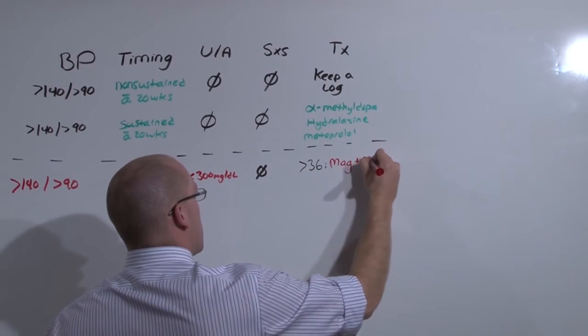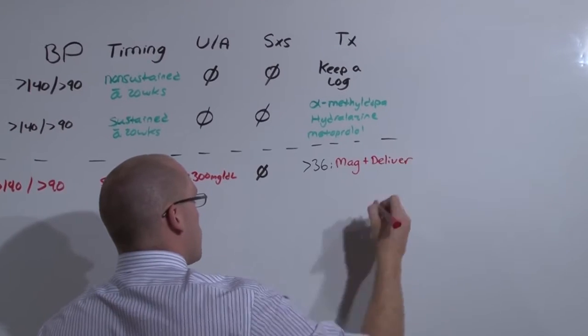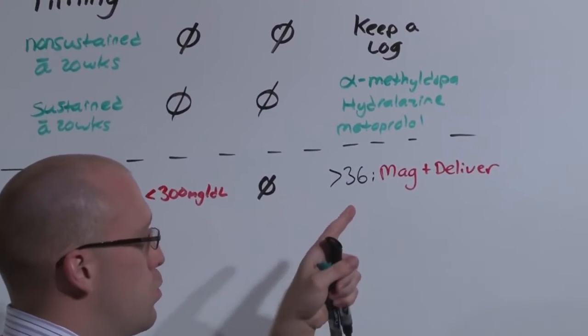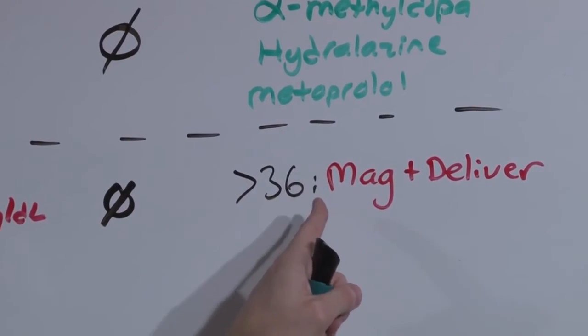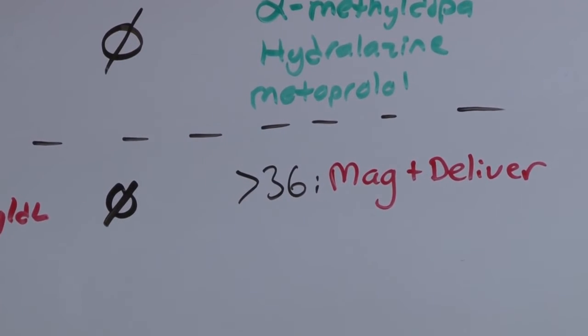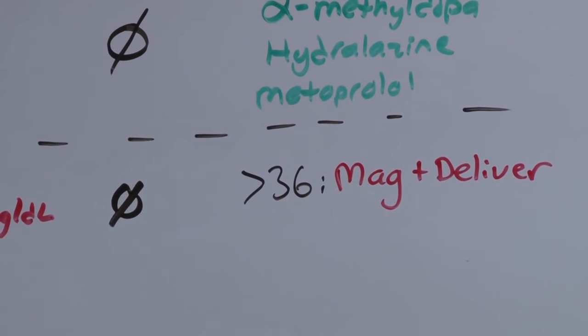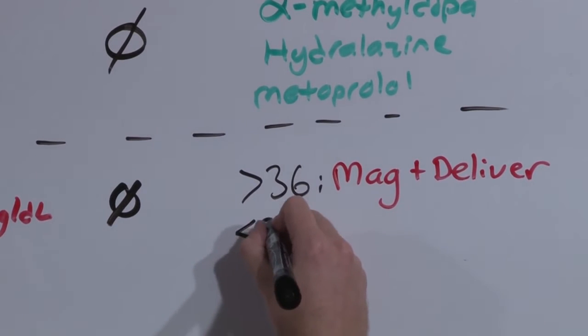You're going to see magnesium as the treatment for all of these conditions. If ever you suspect preeclampsia or eclampsia, you're going to use magnesium. Mag and deliver if at term.